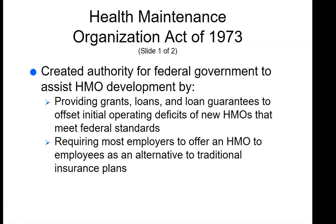The Health Maintenance Organizations Act of 1973 created authority for the federal government to assist HMO development by providing grants, loans, and loan guarantees to offset initial operating deficits of new HMOs that met federal standards, and also required most employers to offer an HMO to employees as an alternative to traditional insurance plans. This Act became the movement to managed care in the United States, with an emphasis on doing away with the fee-for-service system, which rewarded providers for providing more services rather than the appropriate service.